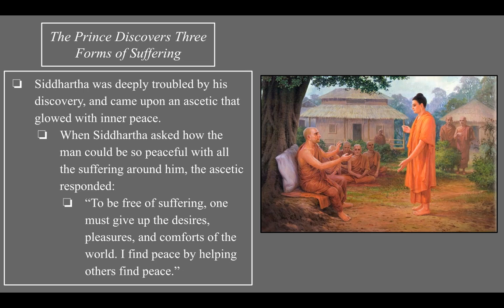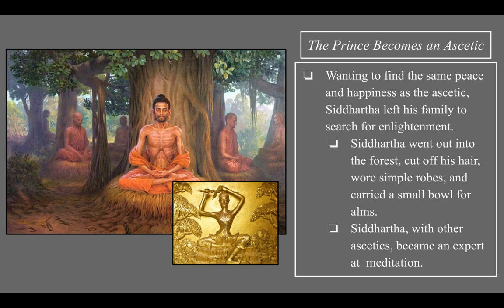Siddhartha was deeply troubled by his discoveries and then came upon an ascetic — a person who gives up worldly pleasures such as possessions, clothes, money, and shelter. The ascetic was glowing with inner peace. When Siddhartha asked how the man could be so peaceful with nothing and with all the suffering around him, the ascetic responded that to be free of suffering one must give up the desires, pleasures, and comforts of the world, saying 'I find peace by helping others find peace.' This really resonated with Siddhartha.